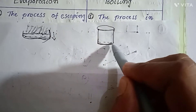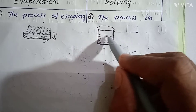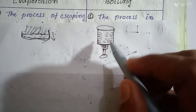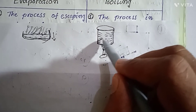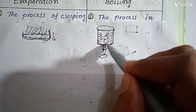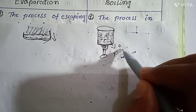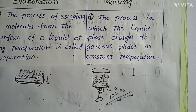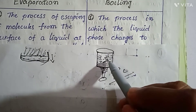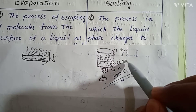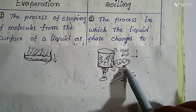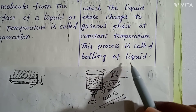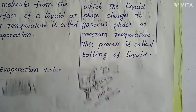Constant temperature, definite temperature. I am taking liquid as water. So here is water — evaporation can occur at any temperature, but boiling takes place only at a constant temperature. Liquid turns into gaseous phase. The liquid phase changes to gaseous phase — this process is boiling of liquid. It takes place at constant temperature only.